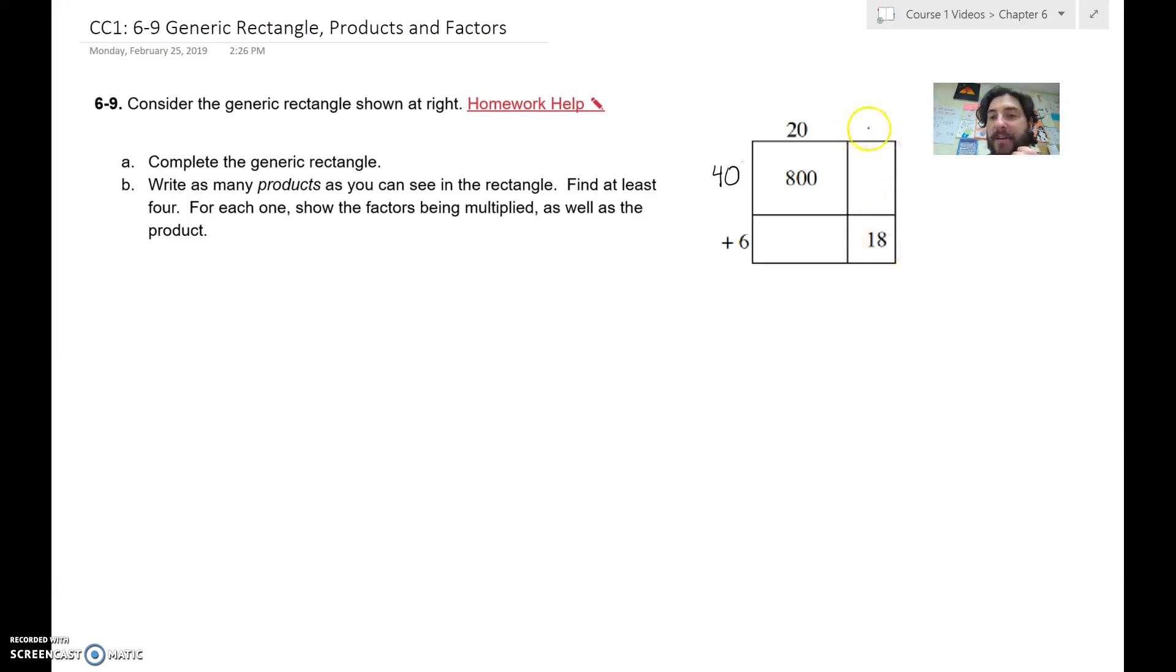So the next missing factor here is up here, and so we've got, well, this is 6 here, so 6 would be here, and so this is 6 rows of what would make 18? Well, 6 rows of 3. So I know that this factor must be 3 up here. So this multiplication problem that we're dealing with is 46 times 23.